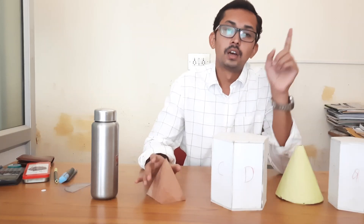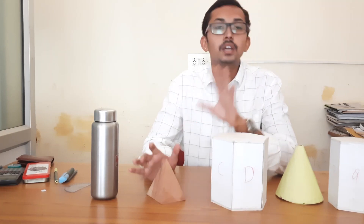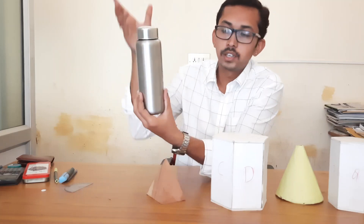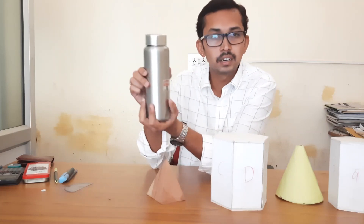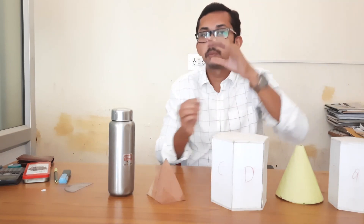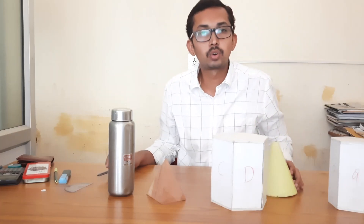The second classification is solids of revolution. Solids of revolution are solids that have been developed due to the revolution of a plane or a line about a fixed axis. For example, this bottle looks like a cylinder. If we take a line and rotate it in a circular manner about a fixed axis, we generate a cylinder.